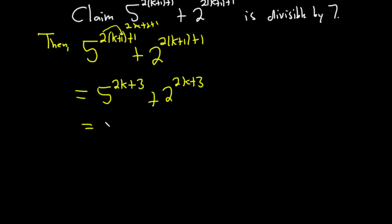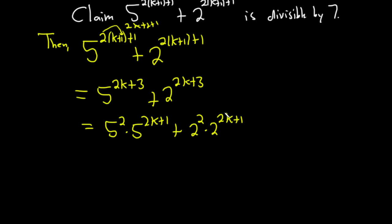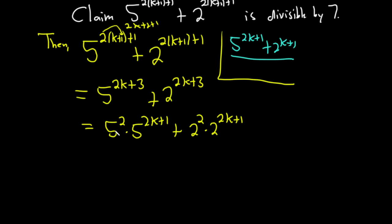We're going to isolate those pieces. Write this as 5 squared times 5 to the 2k plus 1, plus 2 squared times 2 to the 2k plus 1. The motivation is that by the induction hypothesis, 5 to the 2k plus 1 plus 2 to the 2k plus 1 is divisible by 7. The problem is we have a 5 squared and a 2 squared in front. So this becomes 25 times 5 to the 2k plus 1, plus 4 times 2 to the 2k plus 1.